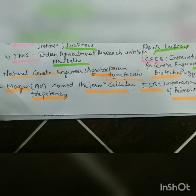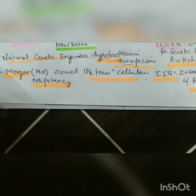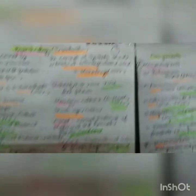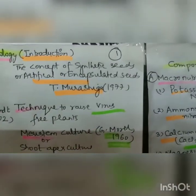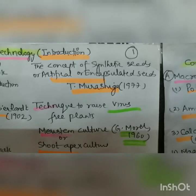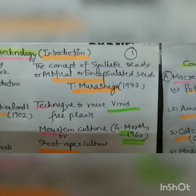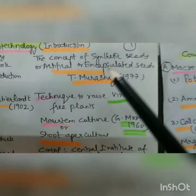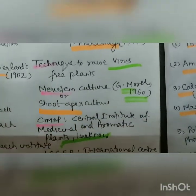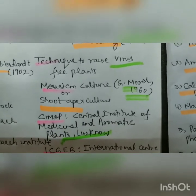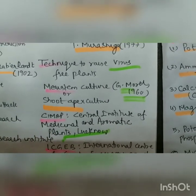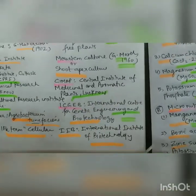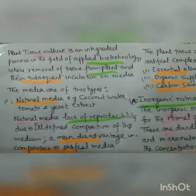Morgan coined the term totipotency. Totipotency is the ability of each cell to form a complete plant through two processes: differentiation and de-differentiation. For easy transport of tissue culture plants, we have synthetic seeds — also called artificial seeds or encapsulated seeds — and this concept was given by T. Murashige. The technique to raise virus-free plants is meristem culture or shoot tip apex culture, studied by G. Morel in 1960 in orchids, specifically Cymbidium.